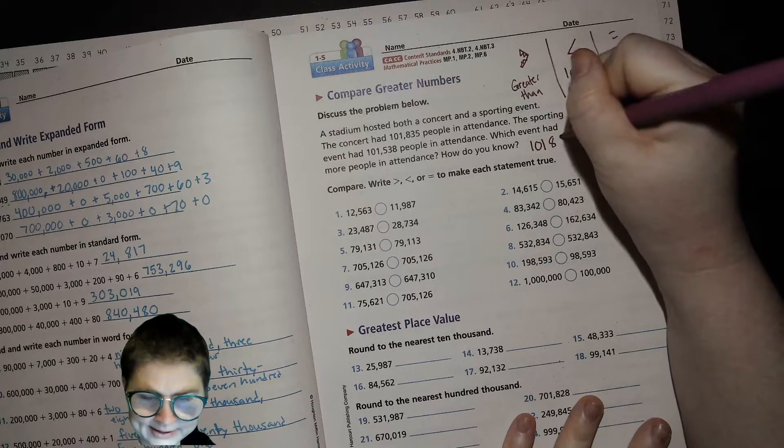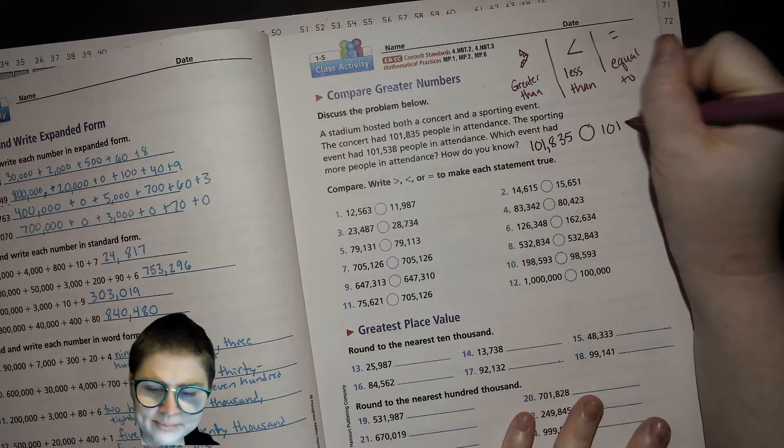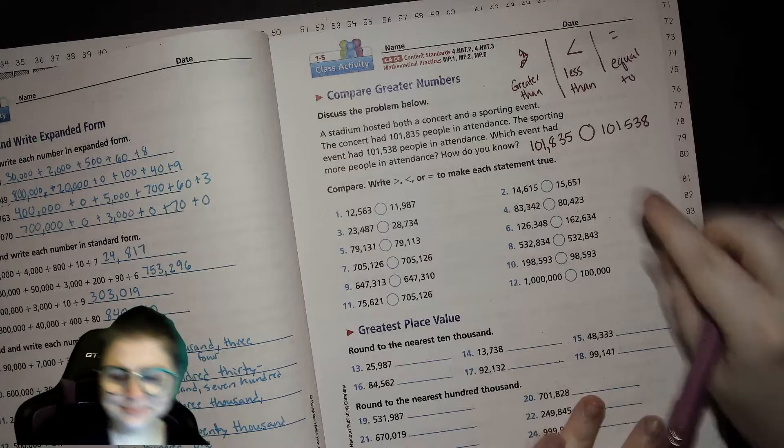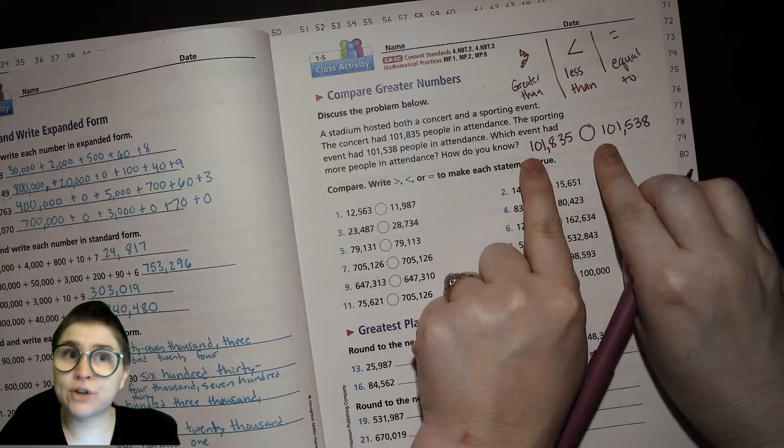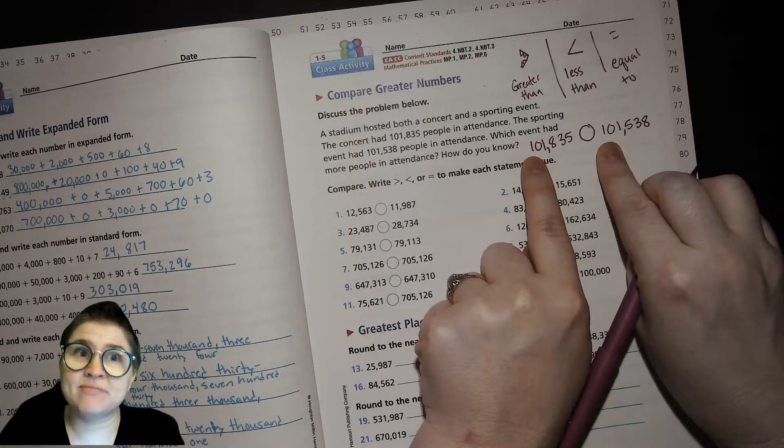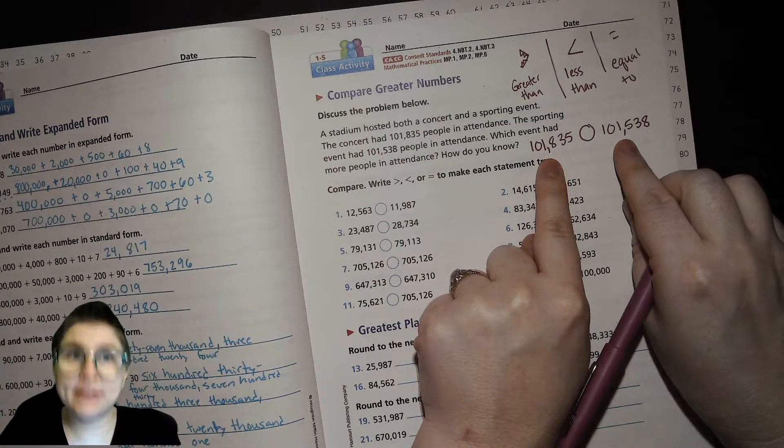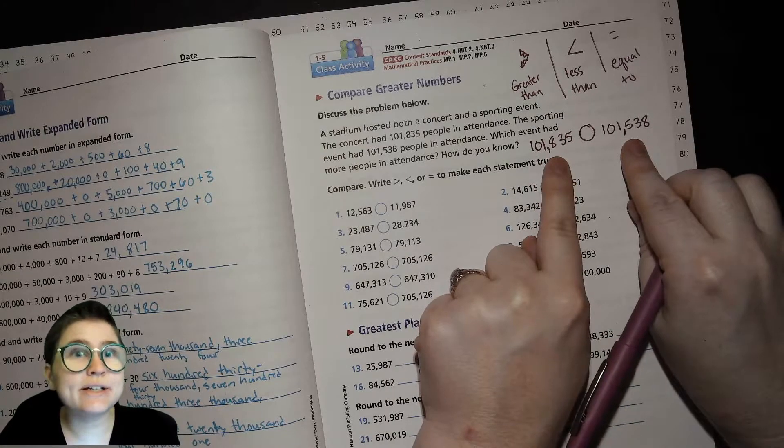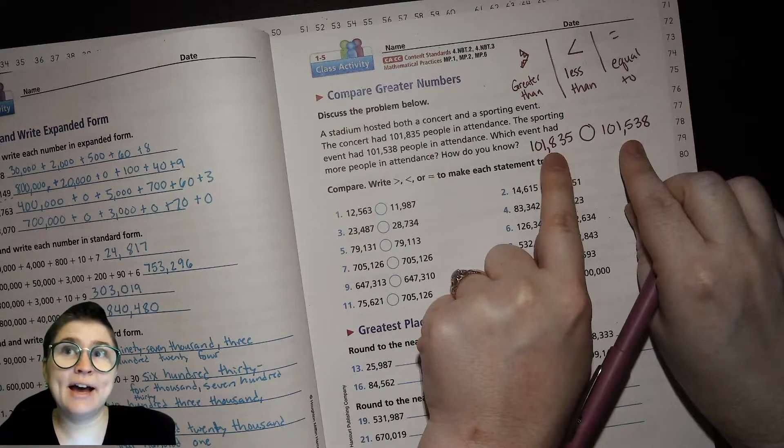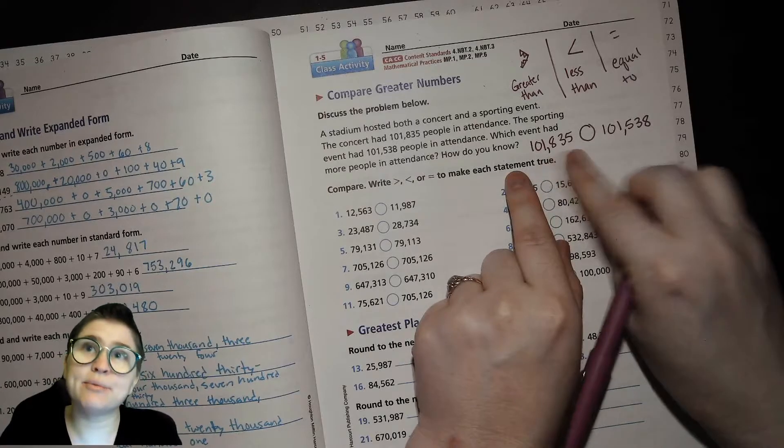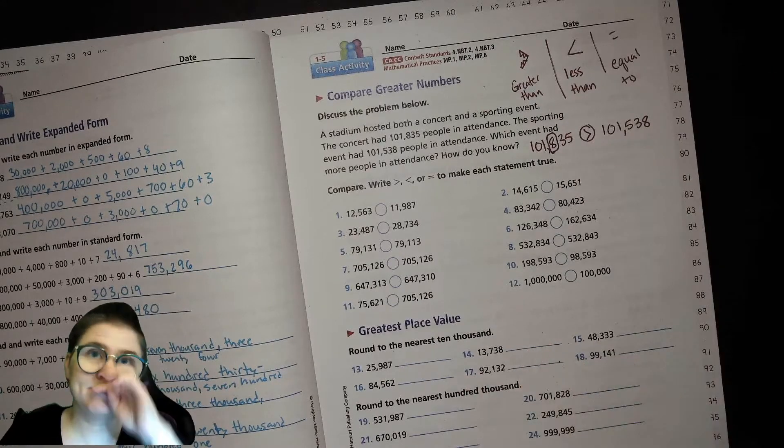So let's write up both of those numbers. 101,835 compared to 101,538. So let's see. They both go into the 100,000. So we're starting there. They both have 100,000. That's the same. They both have zero 10,000. That's the same. They both have 1,000. That's the same. In the hundreds place, however, we have 800 compared to 500. With that little bit different, we can tell that this number is greater than that number because of this eight.